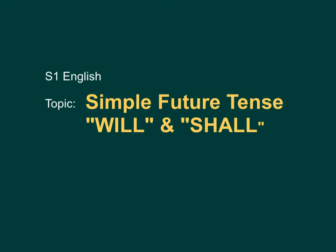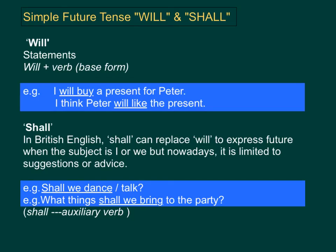Hi kids, welcome to English. In today's lesson, we will talk about simple future tense, will and shall. Will and shall are both ways of expressing the future. In a statement, we use will plus a verb in its base form. For example, I will buy a present for Peter. I think Peter will like the present.